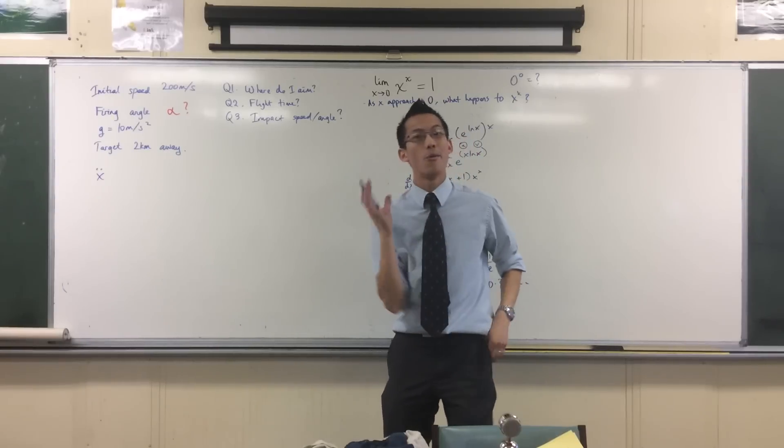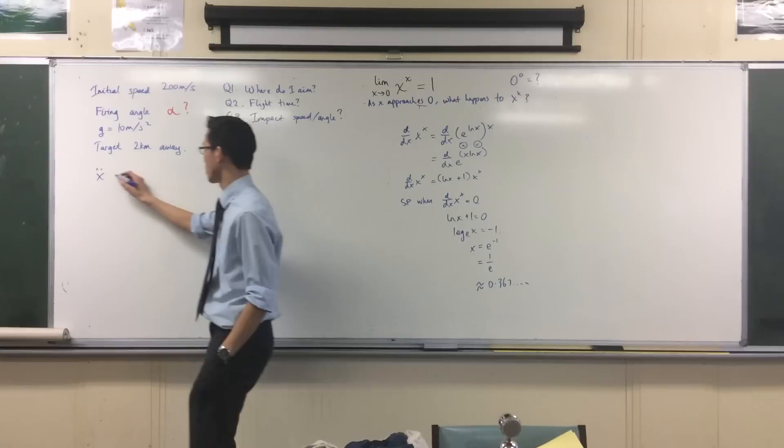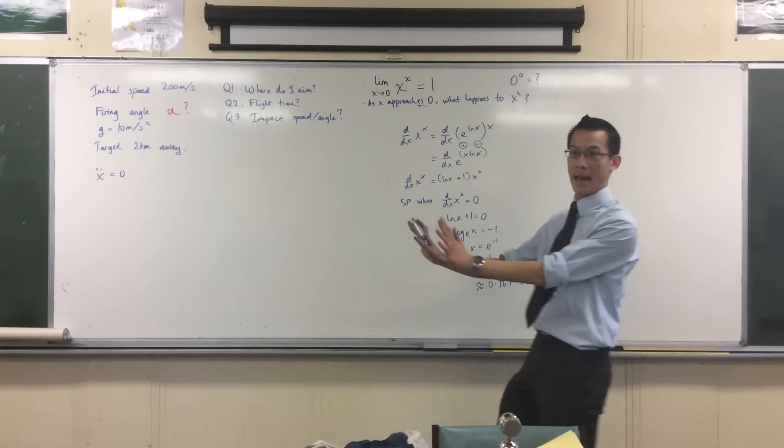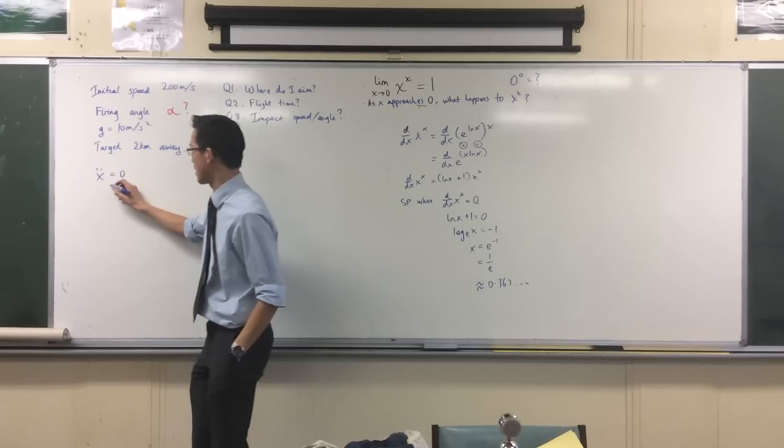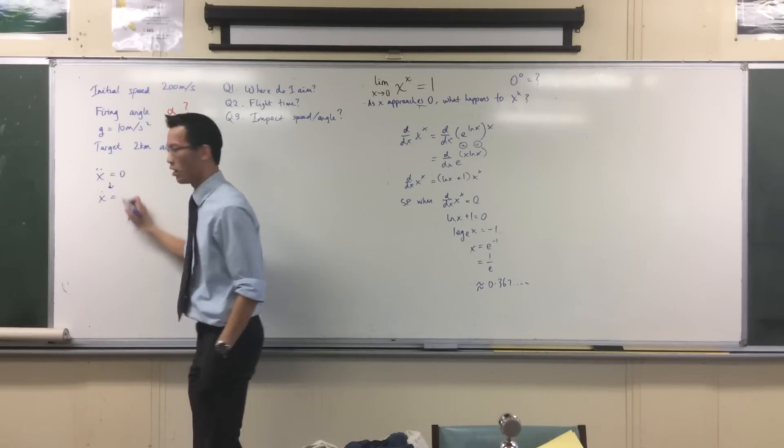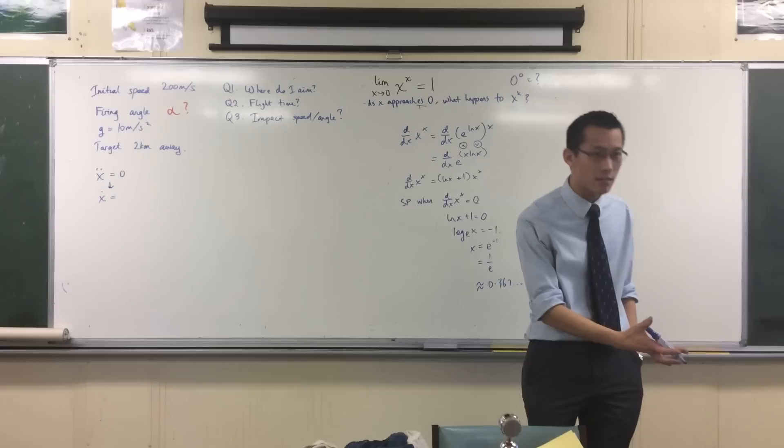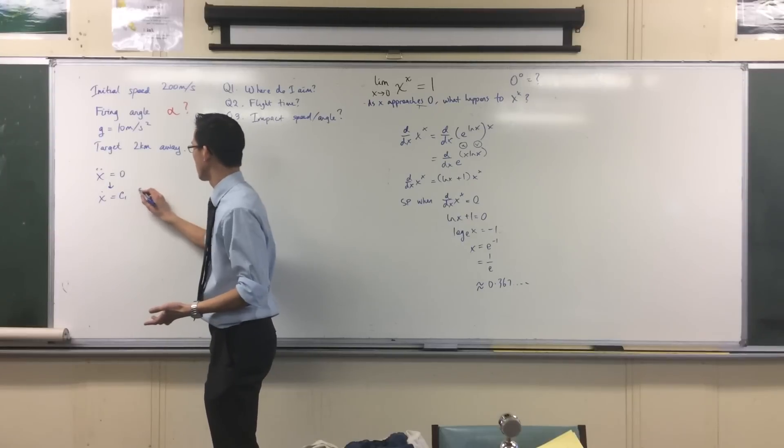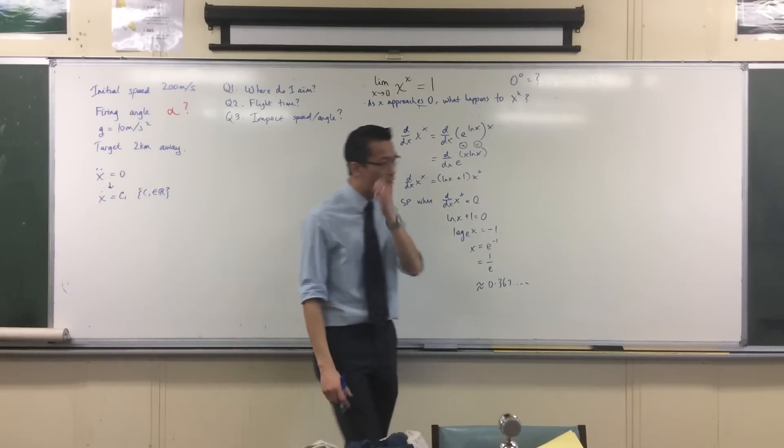Let's do all the x's. What's the horizontal acceleration? Zero. x double dot equals 0. It gets projected and there's nothing pushing it forward or pushing it backward. Now if I want to go further than this and get x dot, what do I have to do? I have to integrate, and I'm going to get some kind of constant. How do I evaluate that constant?